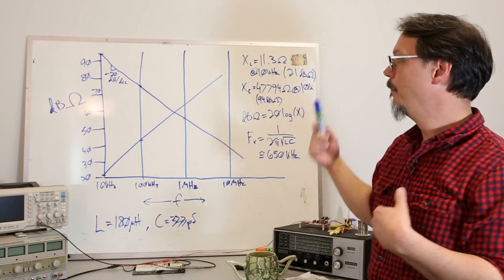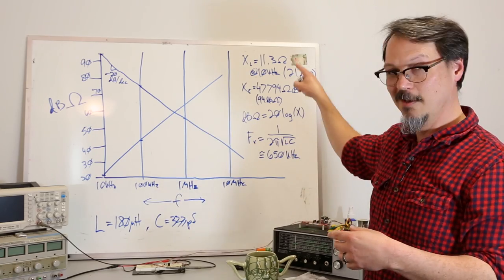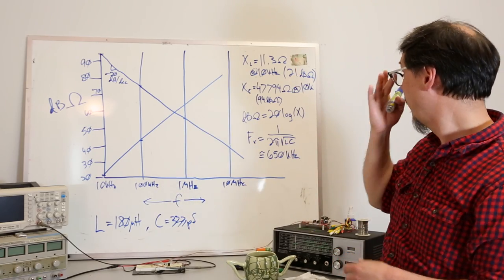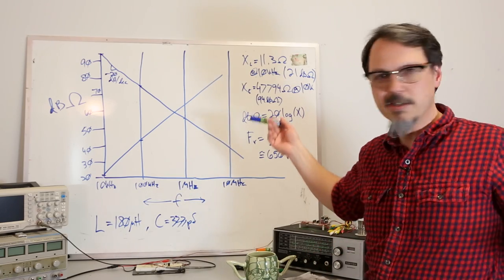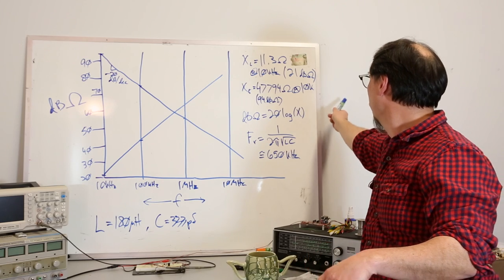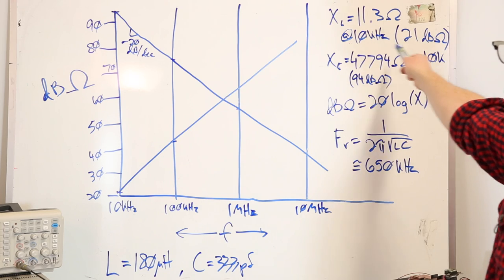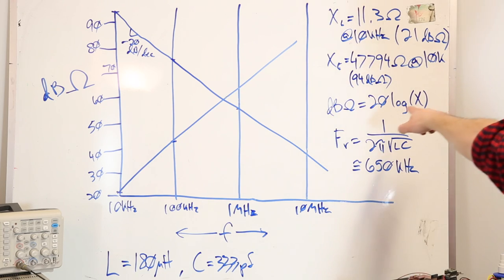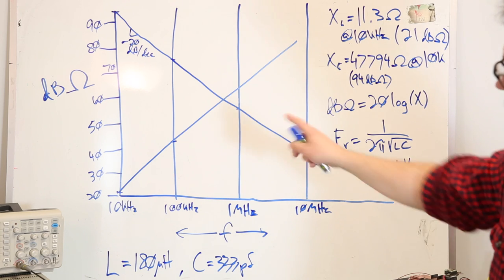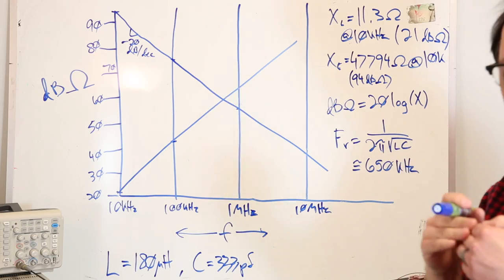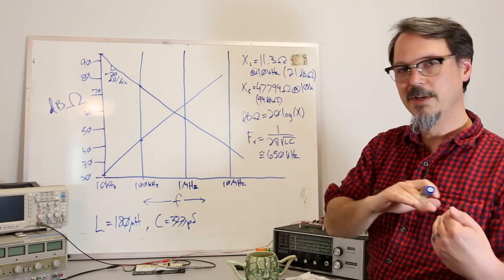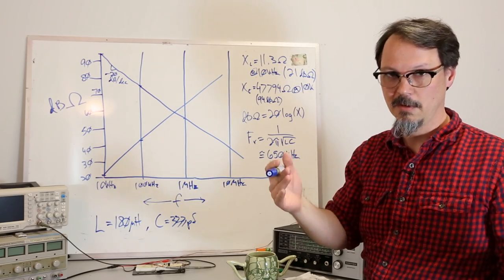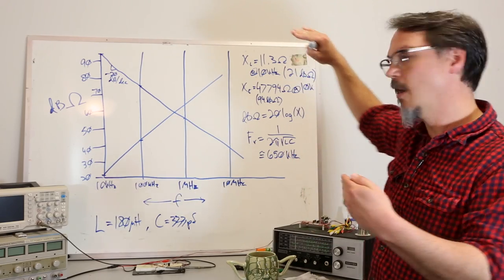The inductor, same thing, only it goes the other direction. So I calculate my inductive reactance at 10 kilohertz, because that's where I started my plot, and I came up with 11.3 ohms at 10 kilohertz, which if you throw it into the dB ohm formula, gives you 21 dB ohm. And then you draw that line at 20 dB per decade going up, because an inductor starts at a very low resistance at DC, like zero, and then increases with frequency.